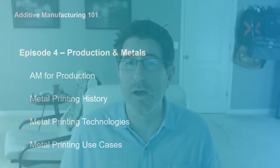Today in episode four, we're going to follow up our prototyping and plastics discussion from episode three with a discussion of production printing and metal printing. We'll talk about when you should think about using additive for production, how metal printing came about, how the various different metal printing technologies work, and some good use cases for metal 3D printing.